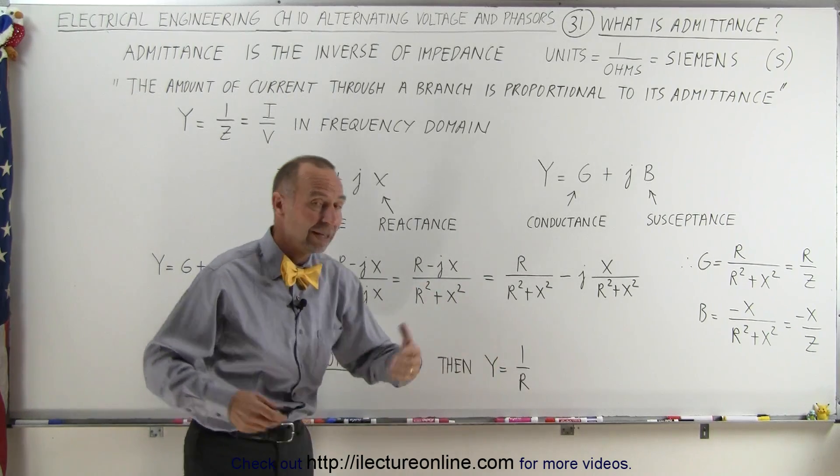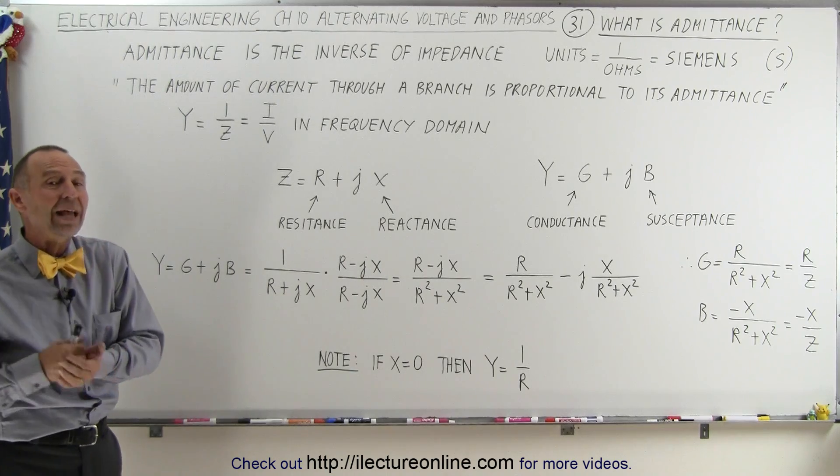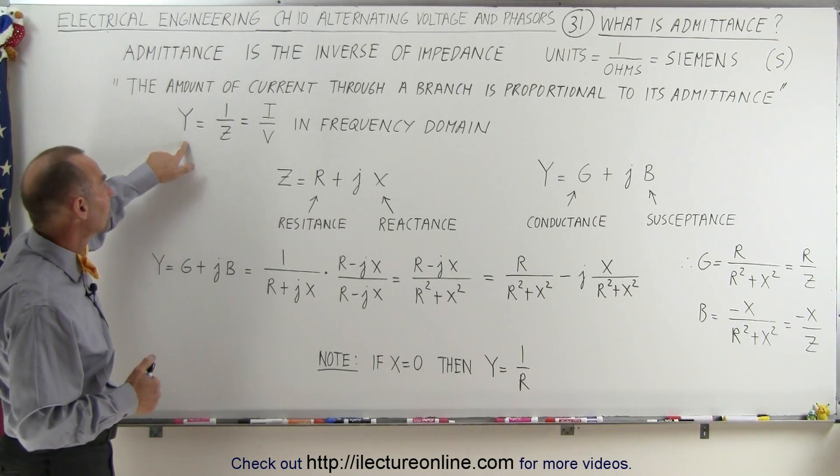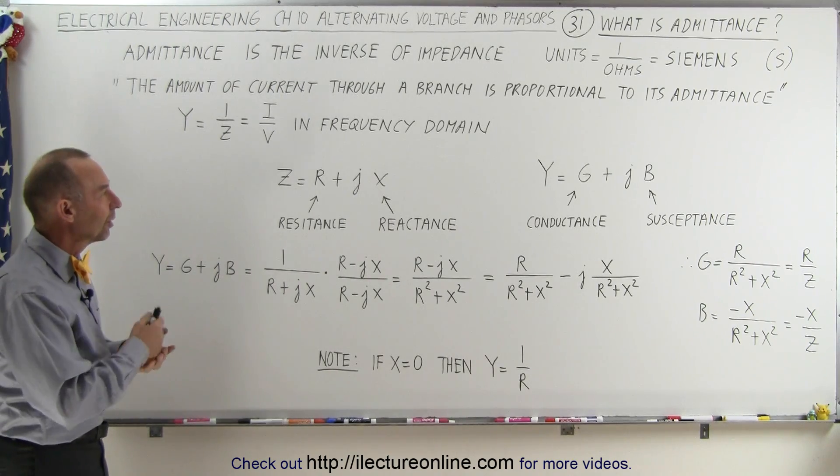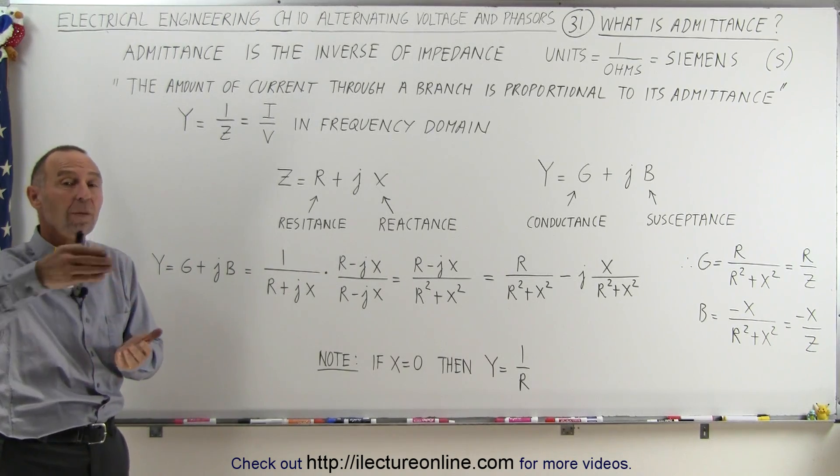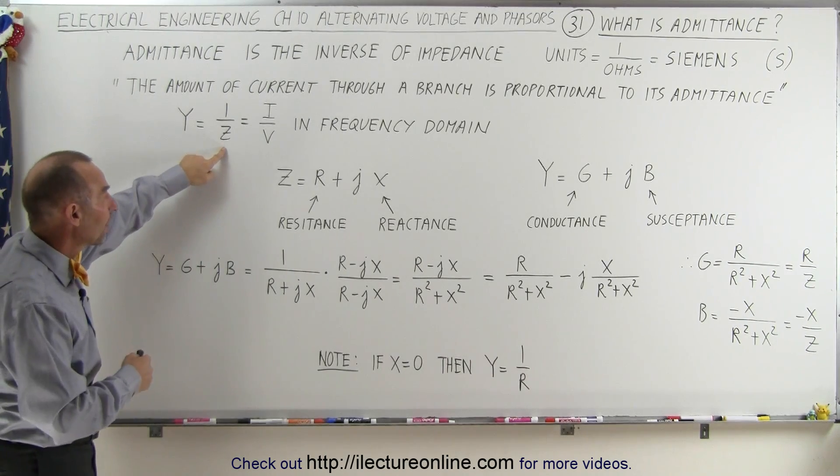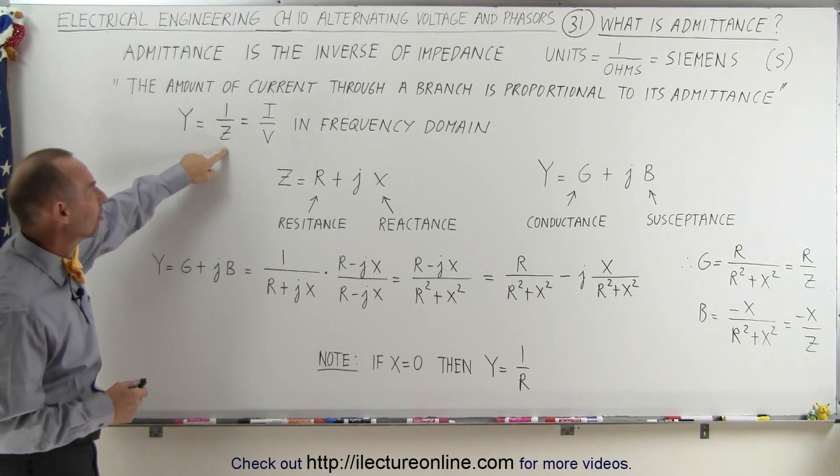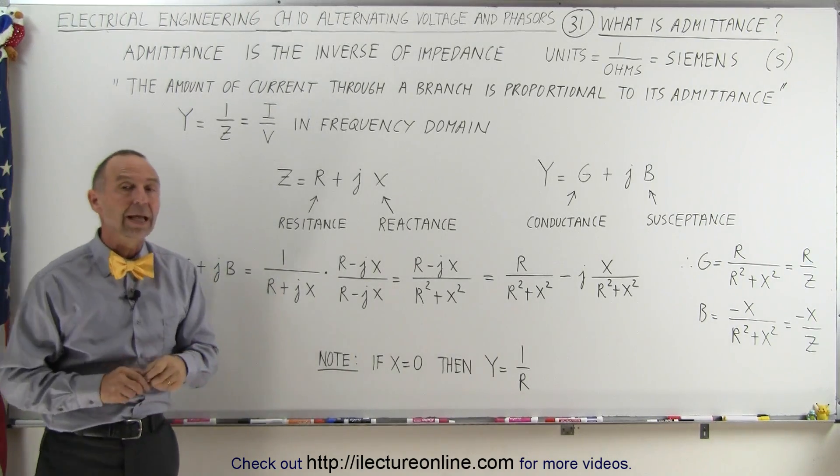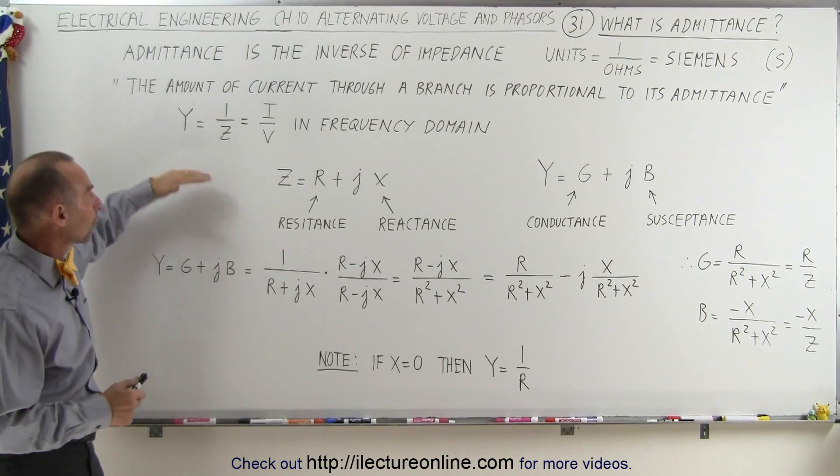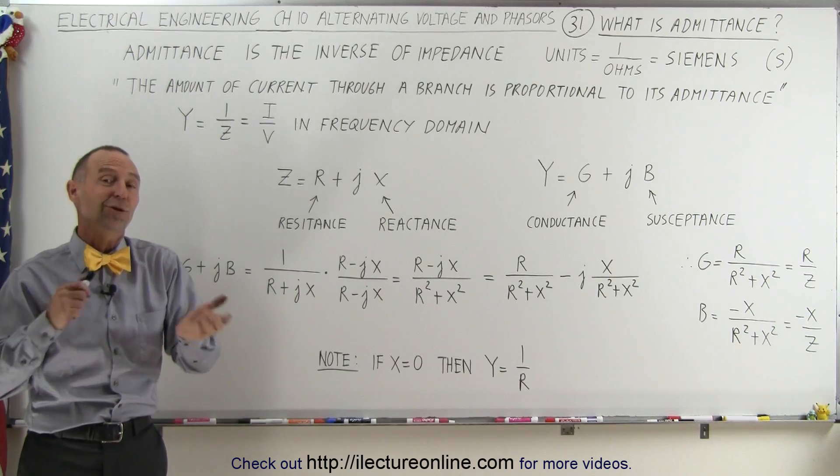Sometimes it is easier to work with admittance than impedance, because when we have parallel and series circuits, we either have to use the sum of the impedance or the sum of the inverses. It may become easier to use the admittance. Keep this in mind, and there will be cases where it might be easier to work with admittance rather than impedance.